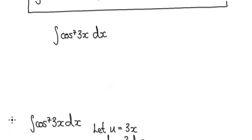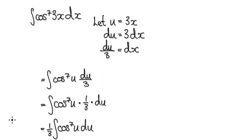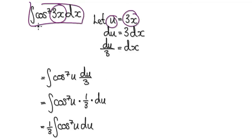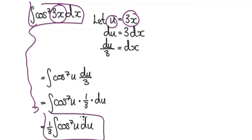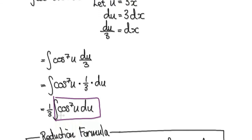Okay, so to do this, replace this thing with u. So let u equals 3x, and then this whole thing here will then boil down to this. So now we can use a reduction formula on this.